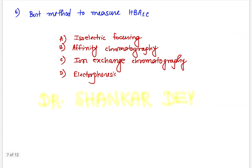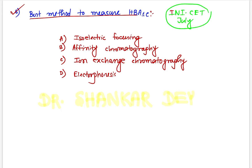Question number 6: What is the best method to measure HbA1c? This is a repeat question from previous papers and was also asked in INICET July session. The answer is ion exchange chromatography — this is the best method to measure HbA1c or glycosylated hemoglobin.